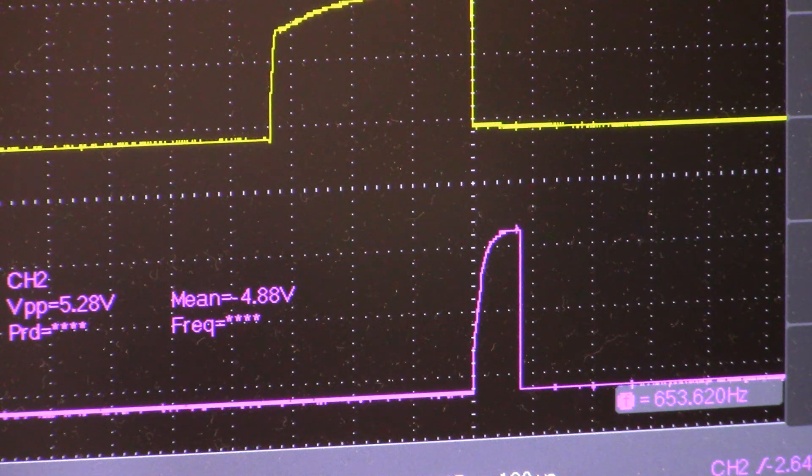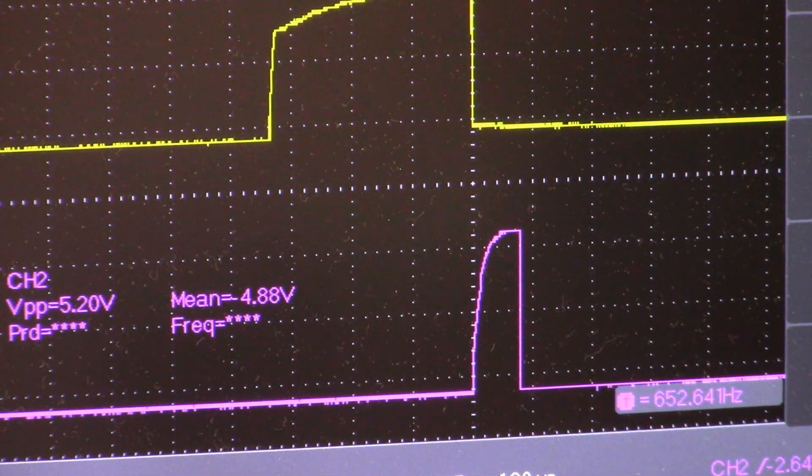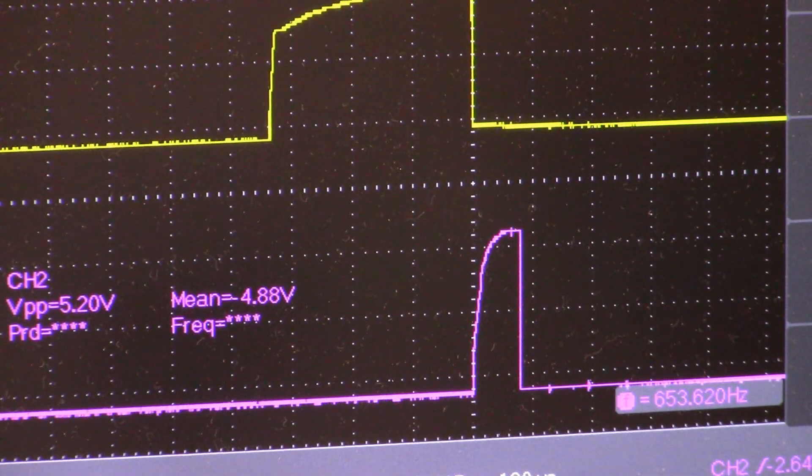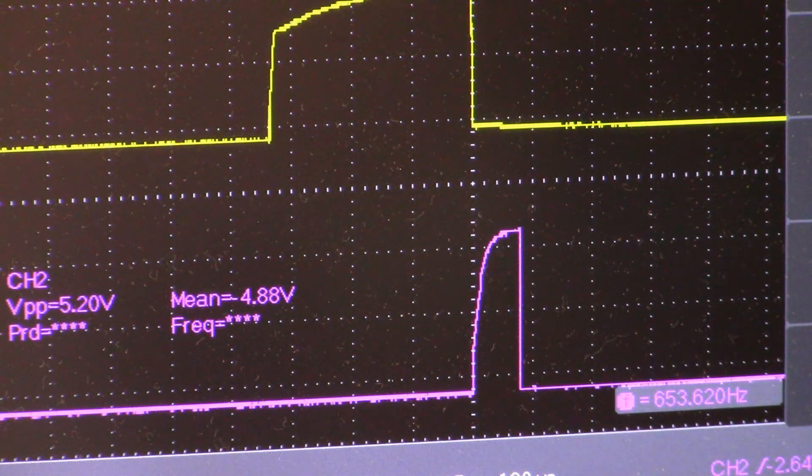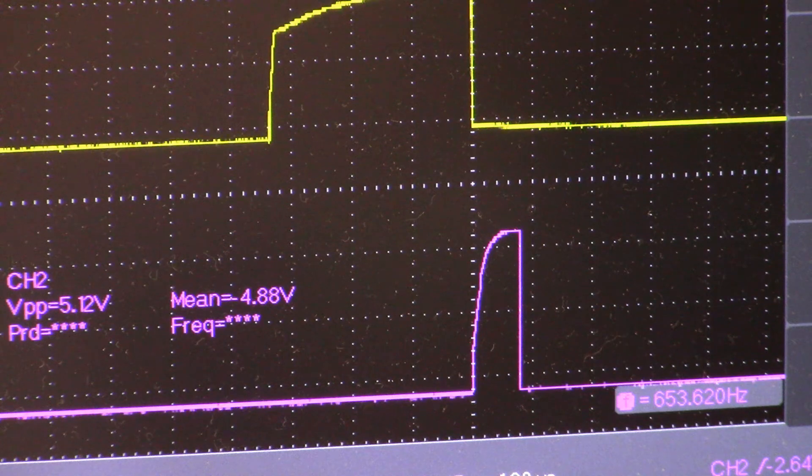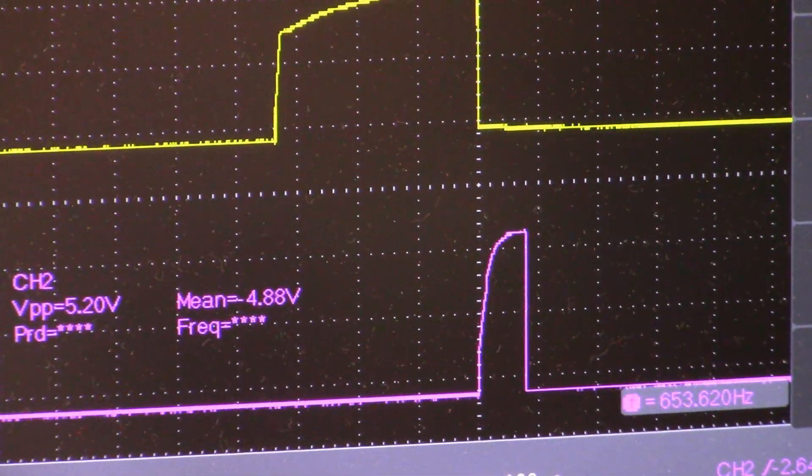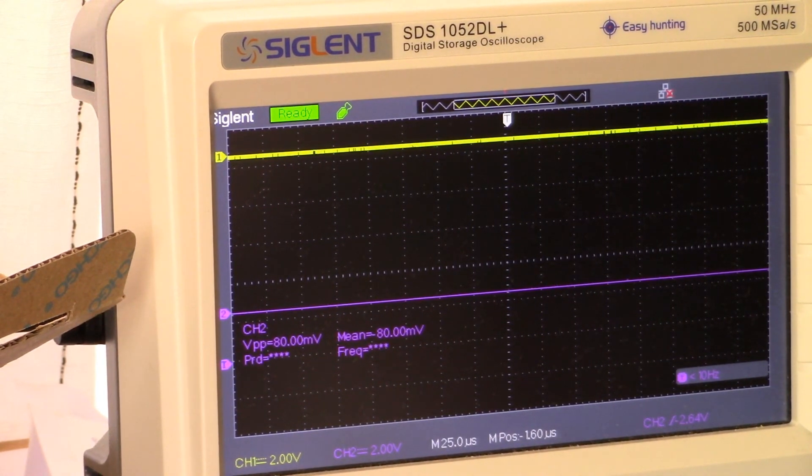I've already done the adjustment on the 20k trimmer pot, and my scope is set up for two volts and 25 microseconds. You can see my channel two probe is just about 20 microseconds. I trimmed that back and that's where we should be.